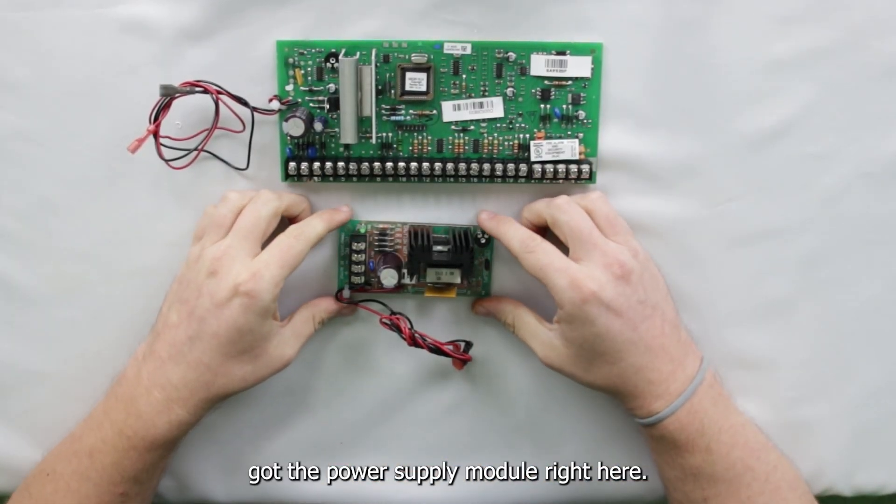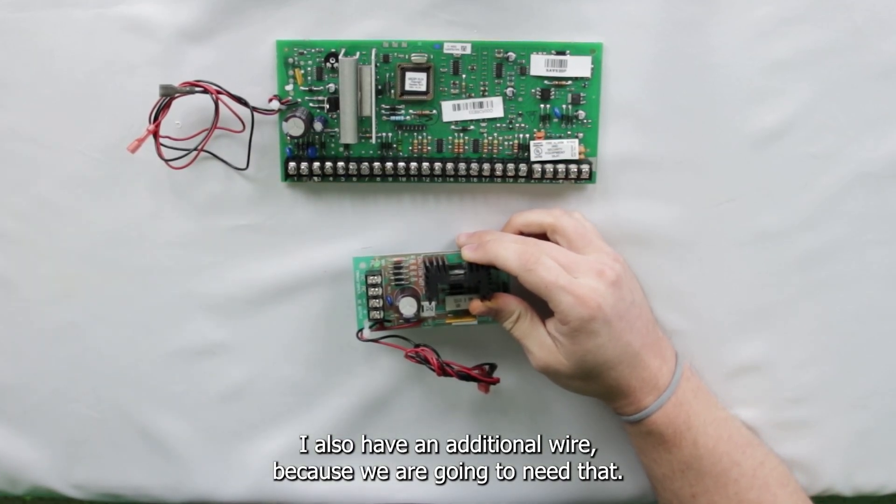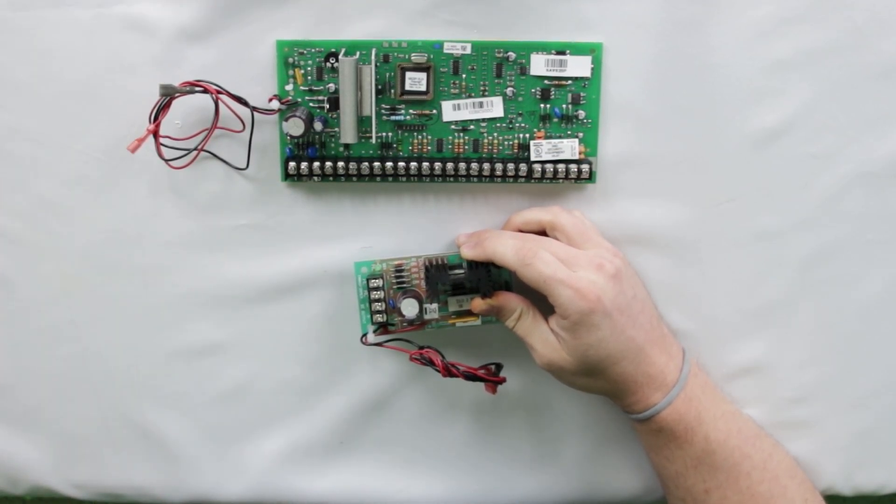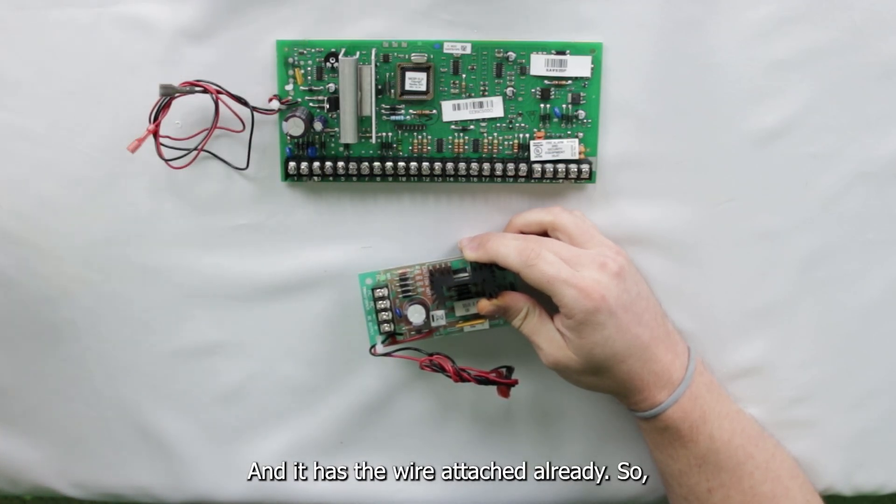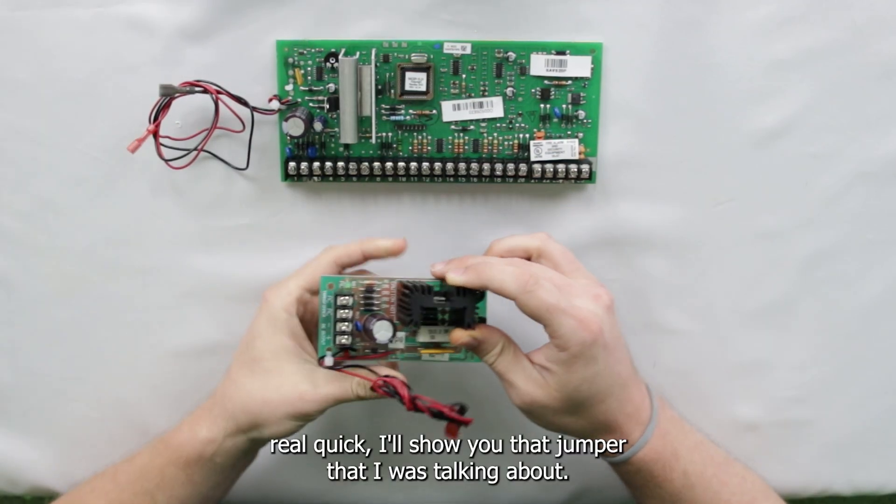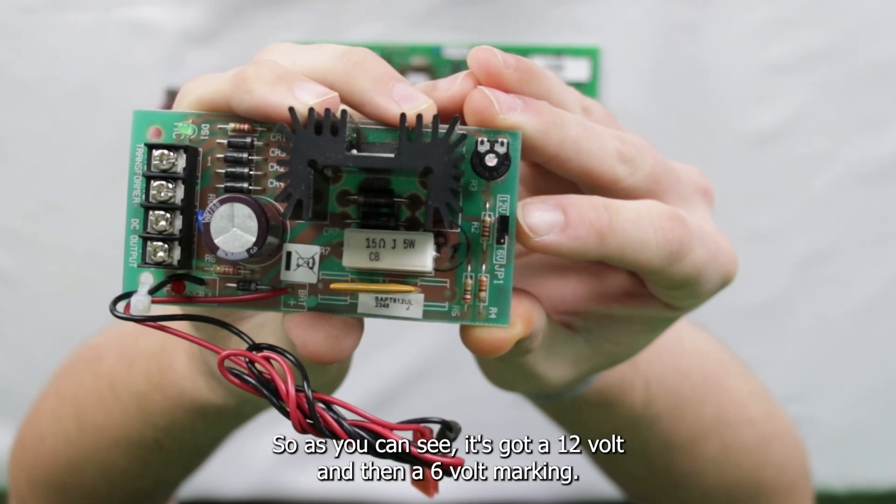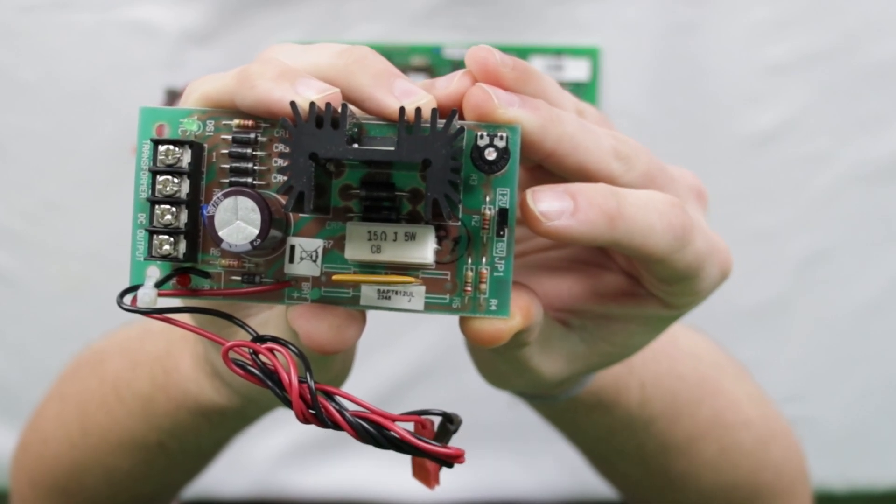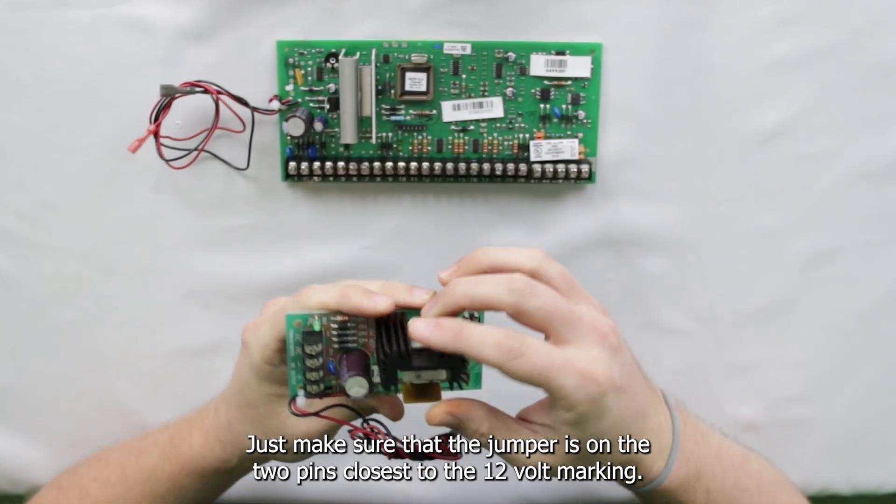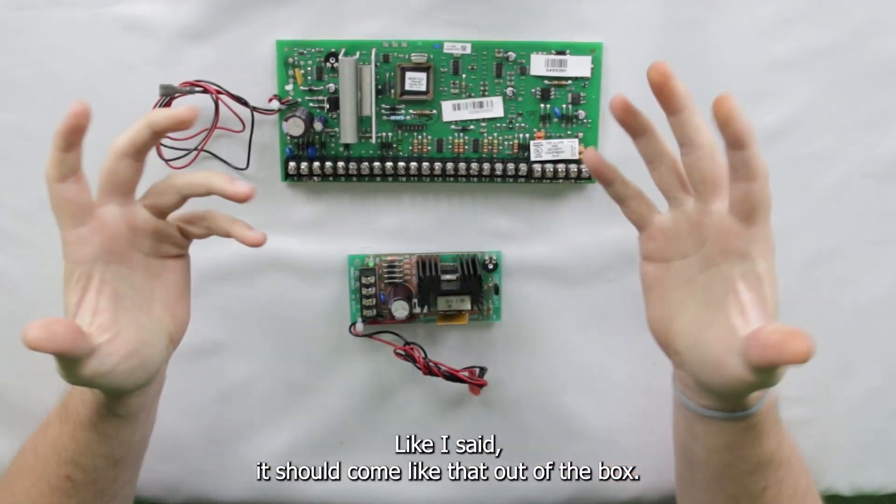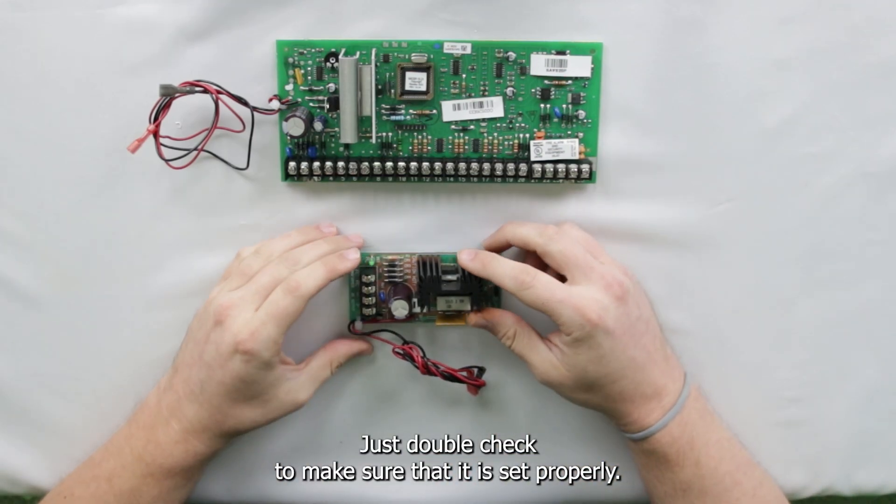Alright, so here we are. Got the power supply module right here, got our mainboard. I also have an additional wire because we are going to need that, and then I have the keypad that we're going to be hooking up with the wire attached already. So real quick, I'll show you that jumper that I was talking about. So it is right here. As you can see, it's got a 12-volt and then a 6-volt marking. Just make sure that the jumper is on the two pins closest to the 12-volt marking, and you're good to go. It should come like that out of the box. Just double check to make sure that it is set properly.